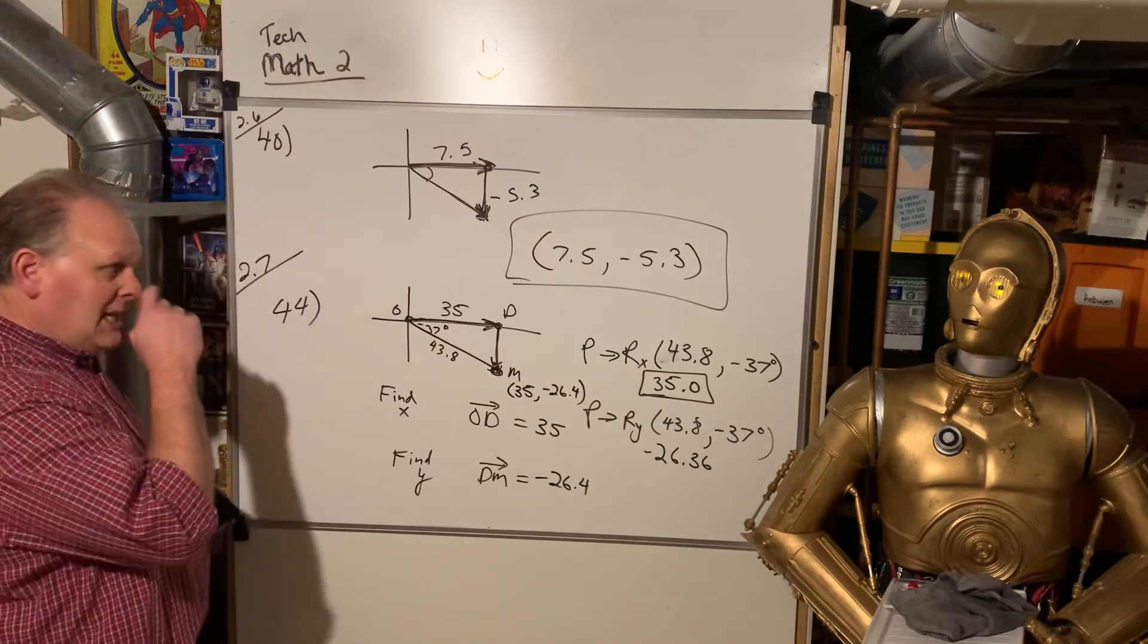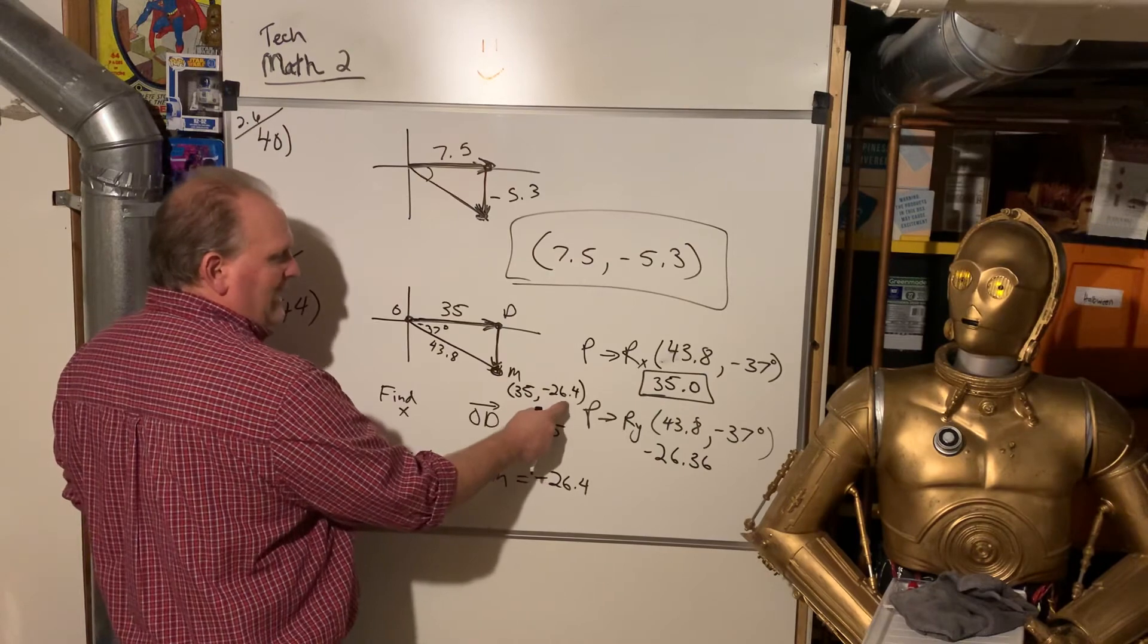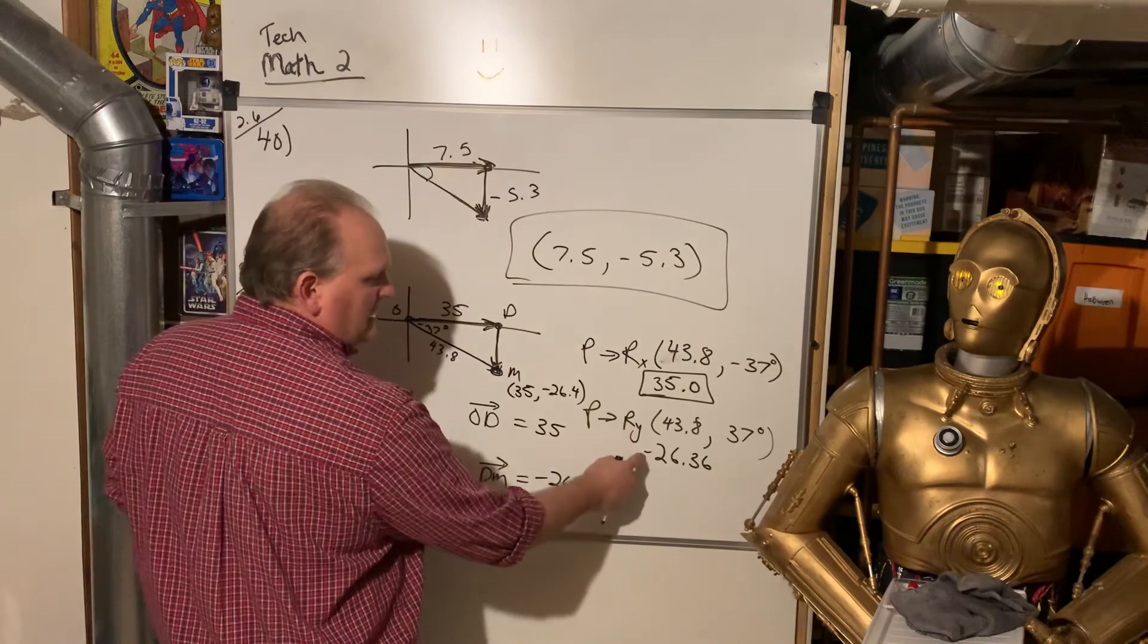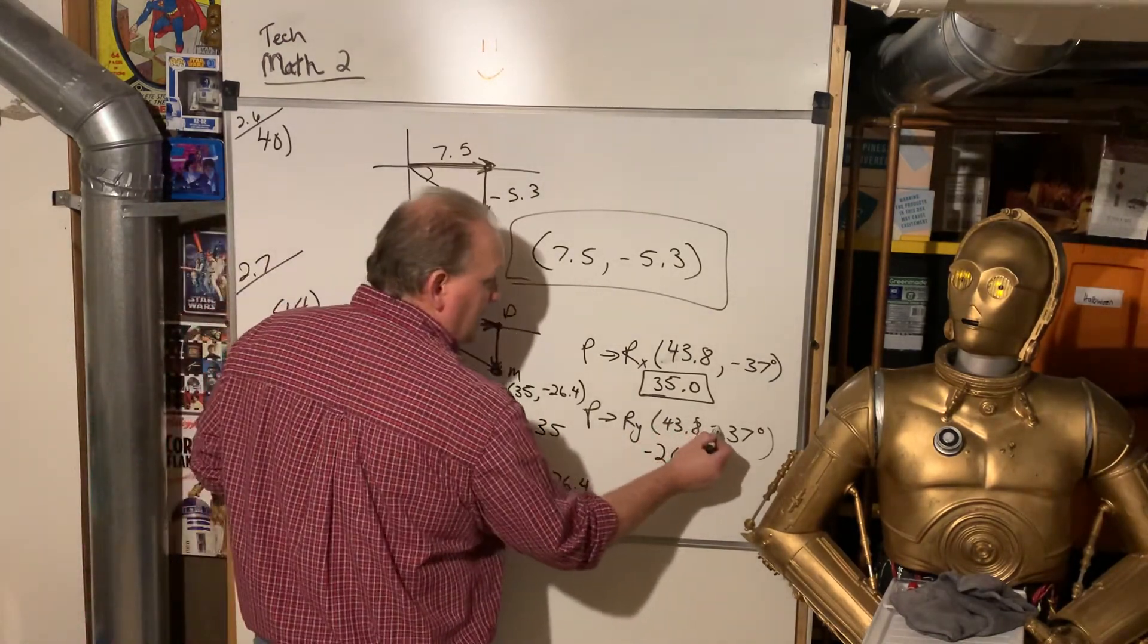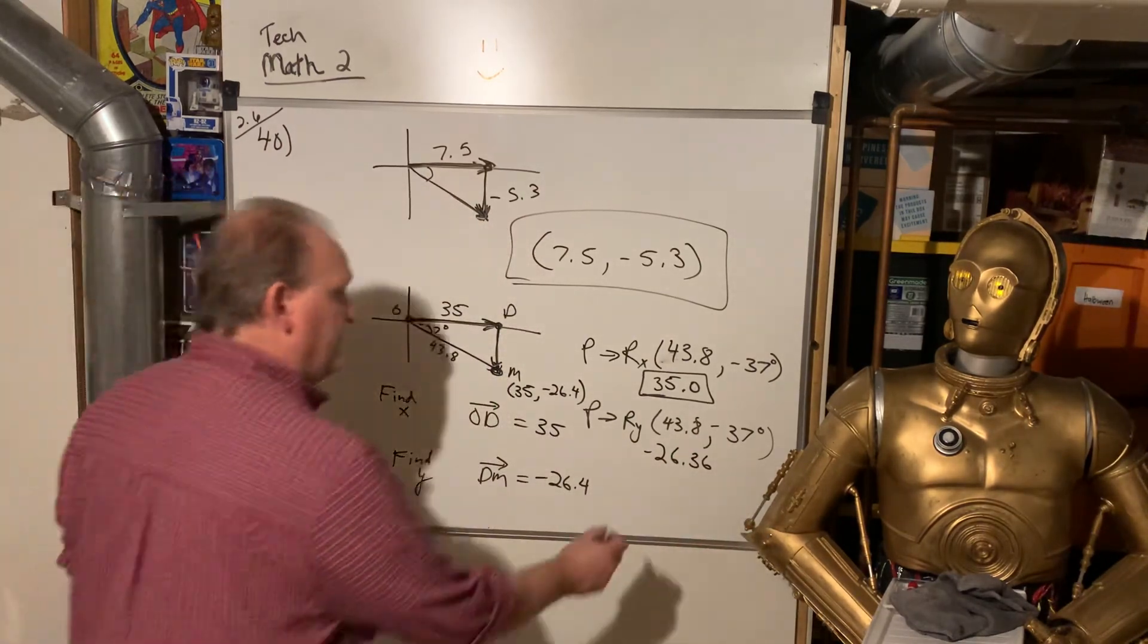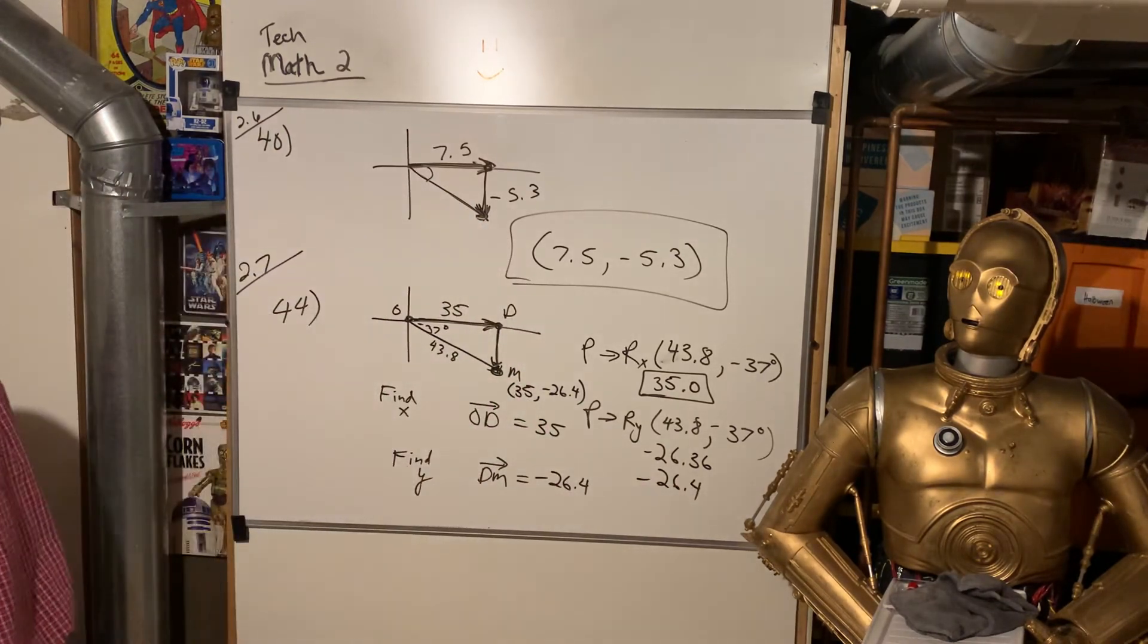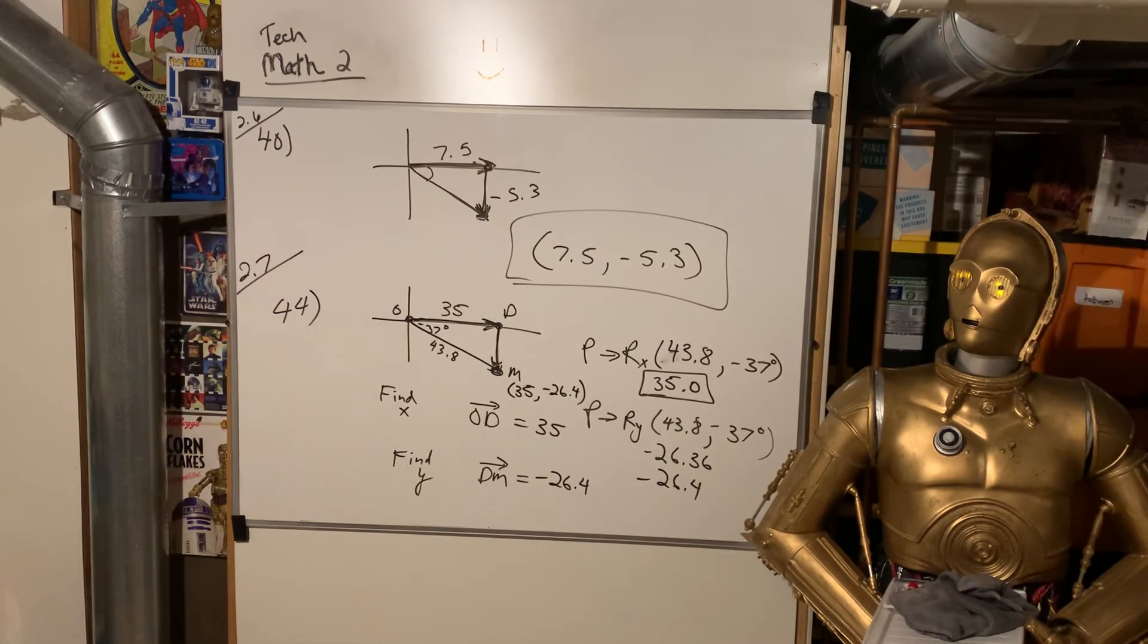Okay. And even if you forgot the negative on the 37, you just have to know, well, it's in the fourth quadrant, so y has to be negative. You just tack the negative on. So if you did this, you just have to add a negative to your answer because you know what quadrant it's in. If you remember the negative on the 37, it'll kick out a 26.4 negative. All right. So that's 2.7. Let's see what we are for time here. Oh. And then the next video will be 2.8, 2.9, and 2.10.